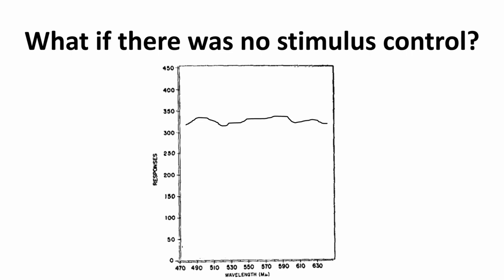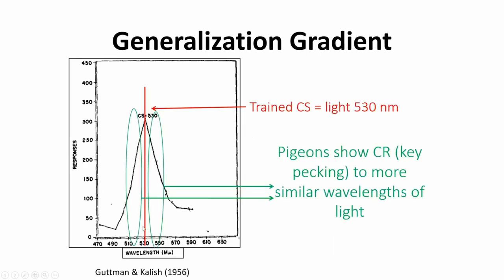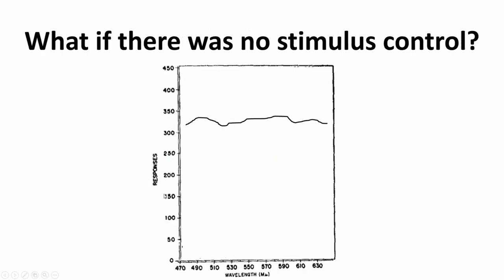What might we expect if there was no stimulus control — if the behavior wasn't being controlled by a particular stimulus? The textbook uses the example of a colorblind pigeon that can't tell the difference between different wavelengths, where all colors look like the same intensity of light. Then we would see non-differential responding — pretty much equal responding to all wavelengths — basically a flat line, rather than the peak at the trained stimulus.